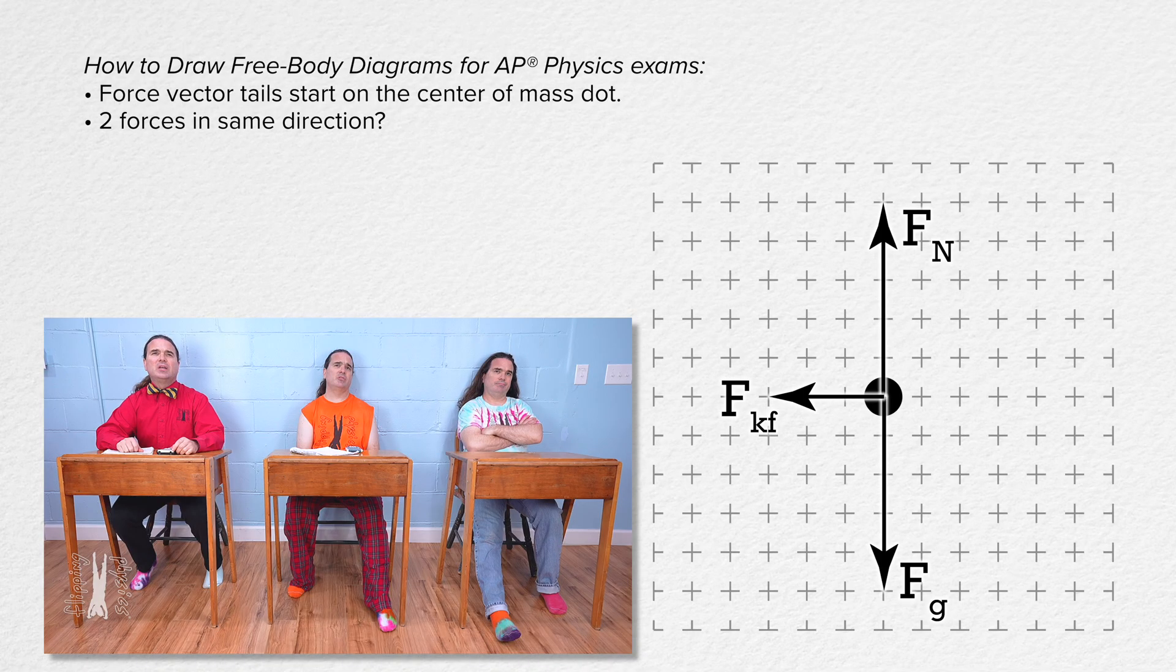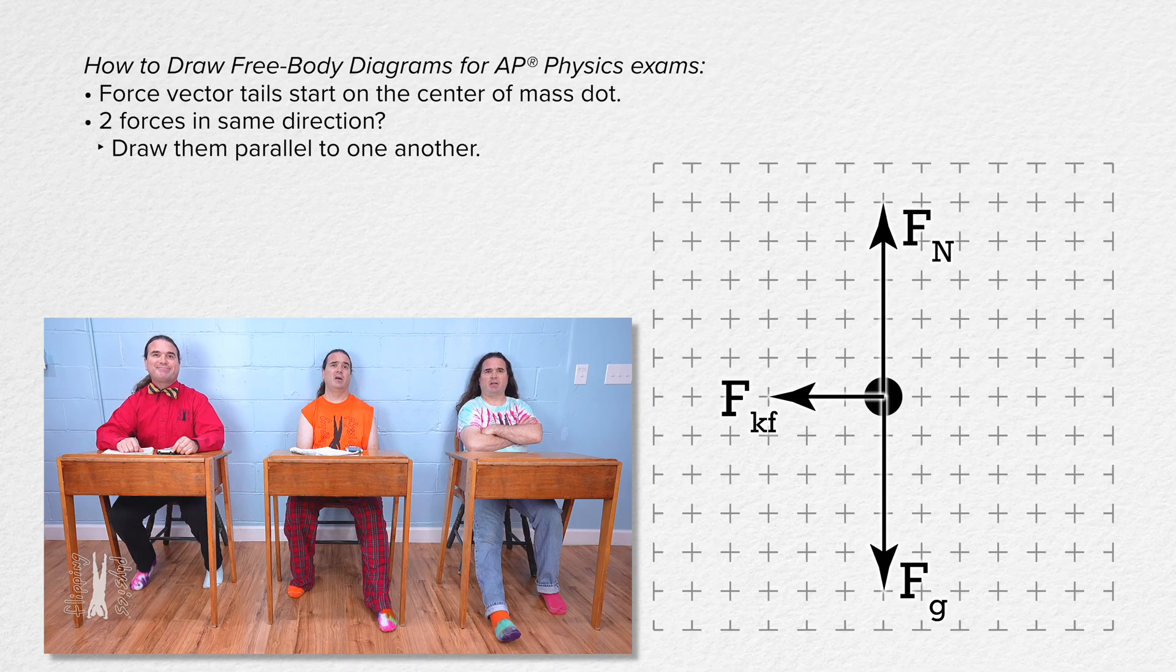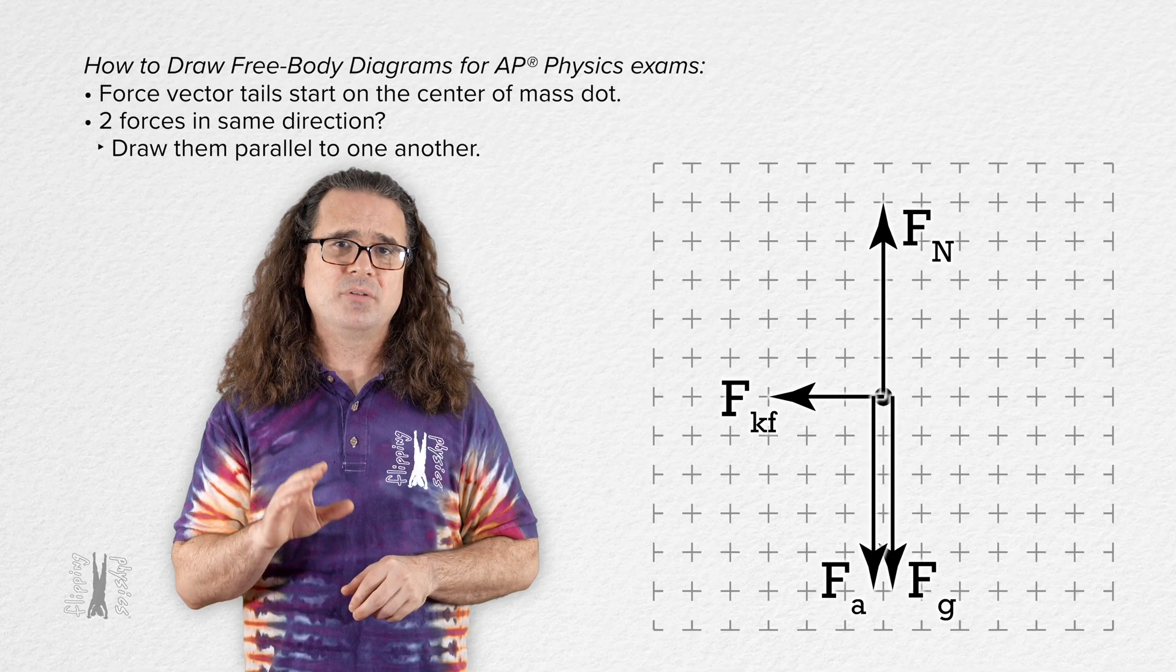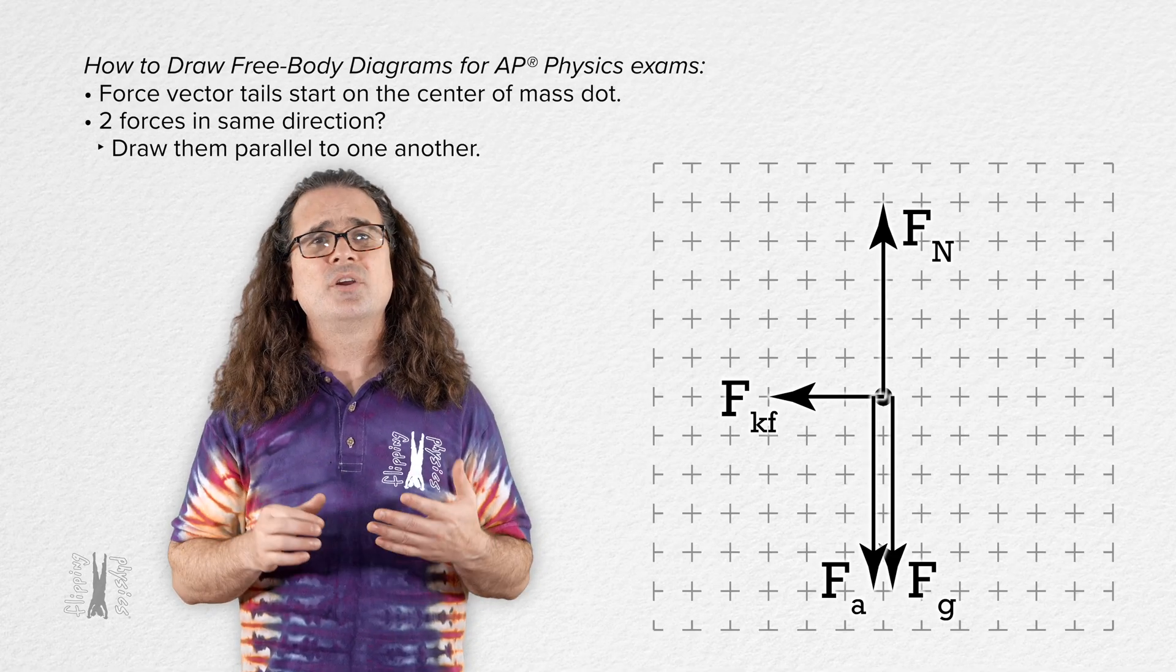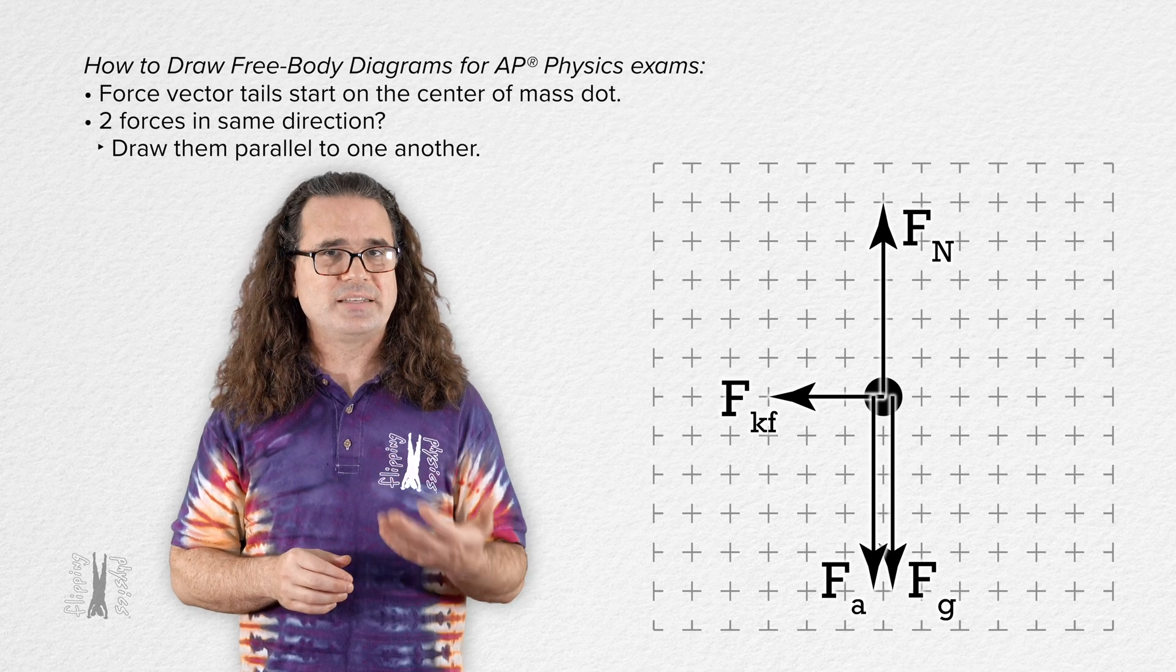But what if there are two forces that act in the same direction? Then you just draw the two vectors parallel to one another, like this. Correct. And if you are having trouble fitting the tails of all your forces on the center of mass dot, you can always increase the size of that dot.